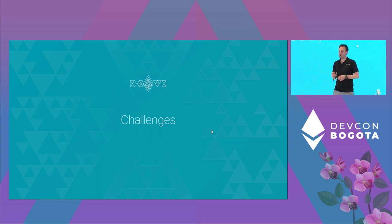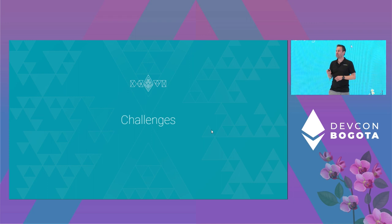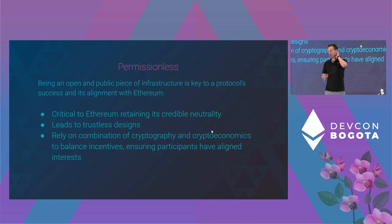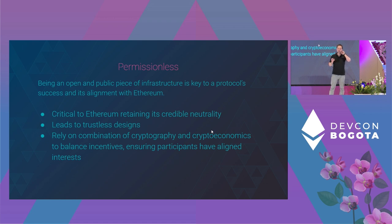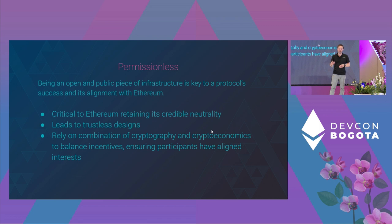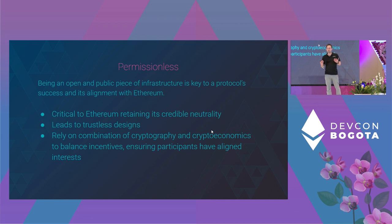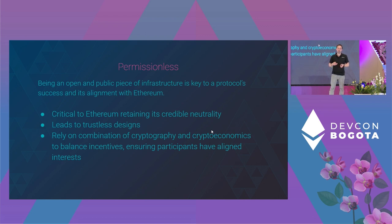Building a decentralized staking protocol is not easy. There are significant challenges to developing a truly decentralized staking protocol. Being an open and public piece of infrastructure is key to a protocol's success and important for its alignment with Ethereum. Being permissionless is a noble pursuit and critical for Ethereum for retaining its credible neutrality. Being permissionless subsequently leads to trustless designs, which are much more resilient in the long term. Like Ethereum itself, decentralized staking protocols have to rely on a combination of cryptography and cryptoeconomics to balance incentives and penalties, ensuring participants have aligned interests. But personally, this is what makes it interesting work.